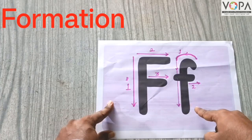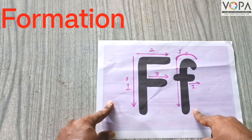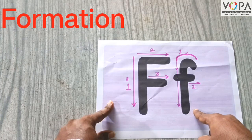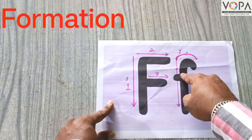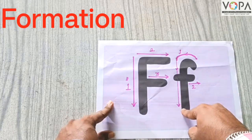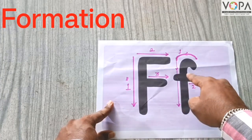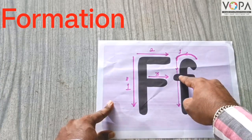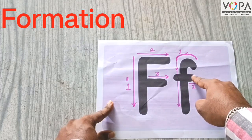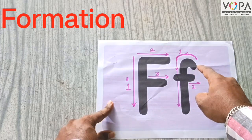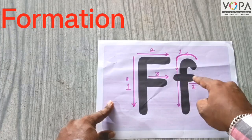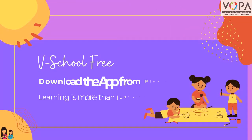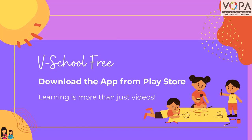Then we have to form a small f. Small f follows the drawing line. There are 2 steps to make a small f.